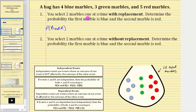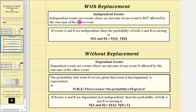Because you select the first marble and then replace it back into the bag, the outcome of the first event does not affect the outcome of the second event, and therefore the two events of selecting the two marbles are independent events. Independent events are events where an outcome of one event is not affected by the outcome of the other. If A and B are independent, then the probability of both A and B occurring is equal to the probability of A times the probability of B.